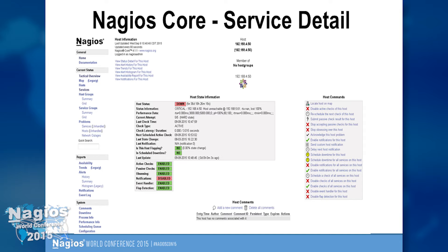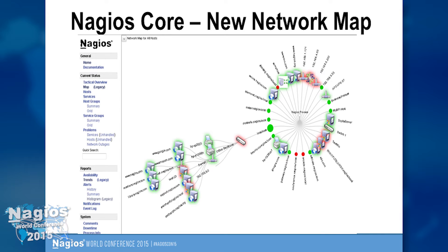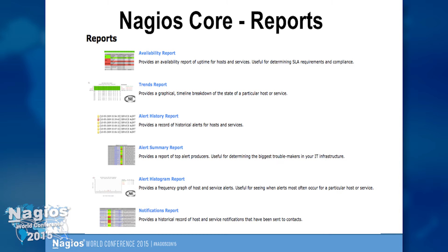Here's the new network map, new in Core 4.1. There are actual custom icons identifying the hosts. The network map is a network topography diagram generated based on the parent-child relationships you define when configuring hosts and services. You get cool alerting logic — if Nagios can't reach something, it won't alert as warning or critical but instead say it's unreachable. There are also reports: availability, trends, a history of all alert activity, alert summary, histogram, and a notification report.